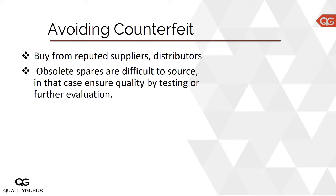When it comes to avoiding counterfeit material, the best approach is to buy from reputed suppliers or distributors only. However, the problem arises when components become obsolete and you need them for repair. For example, if you have an old PC and need a spare part that's no longer readily available, you might have to go to places like eBay or less reputable sources — and there's always doubt whether the spare is authentic, original, counterfeit, or refurbished.